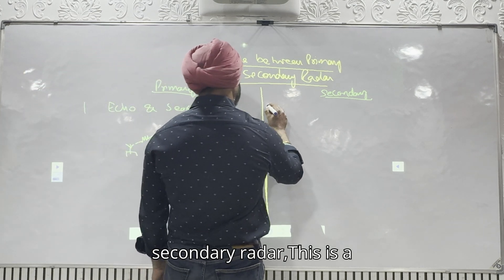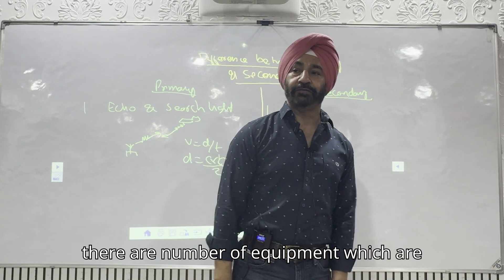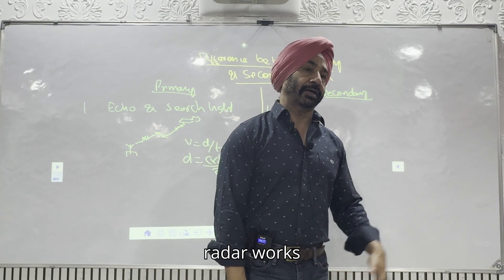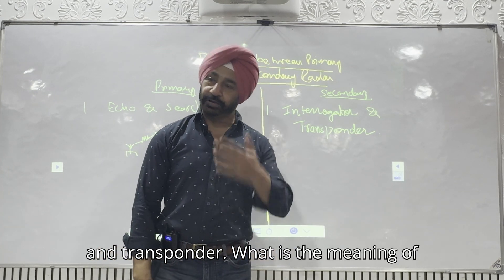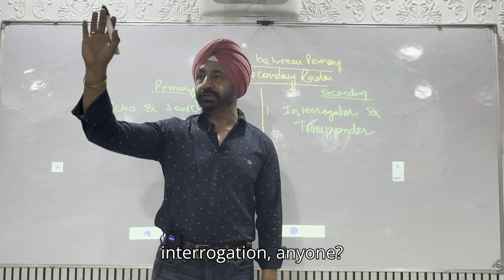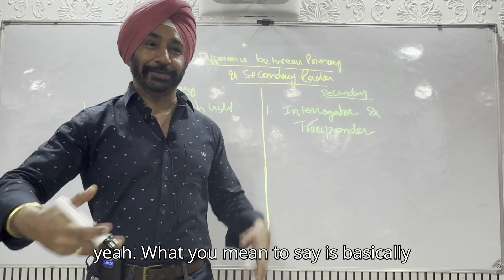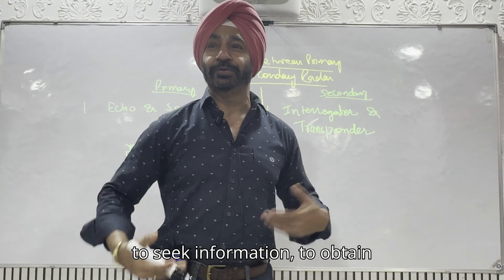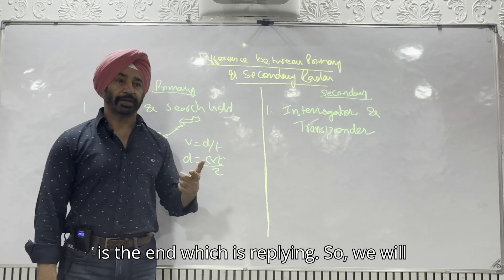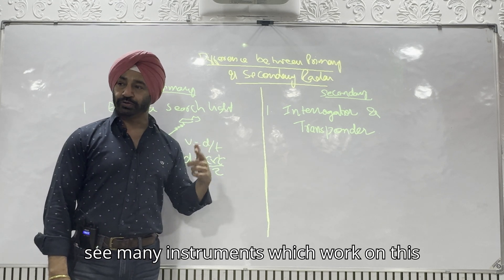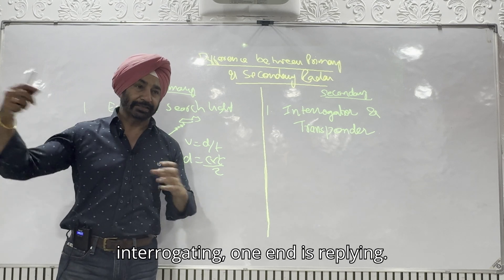When you talk about secondary radar, this is a principle, not an equipment as such — there are a number of equipment designed on this principle. Any secondary radar works on the principle of interrogator and transponder. Interrogation means to seek or obtain information. The transponder is the end which is replying. We will see many instruments which work on this principle: one end is interrogating, one end is replying.